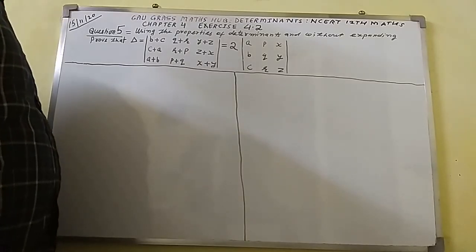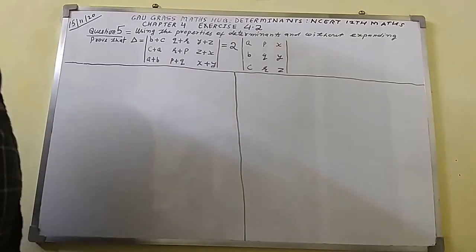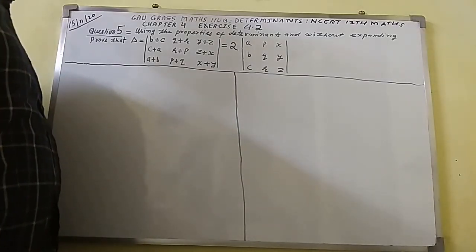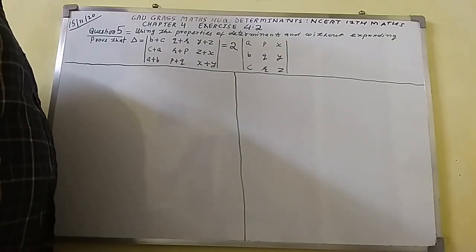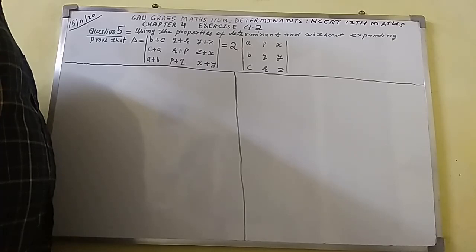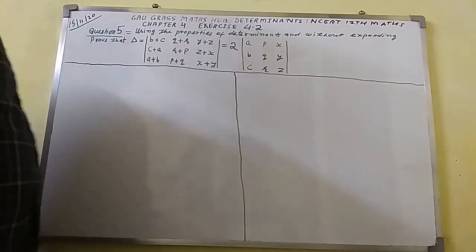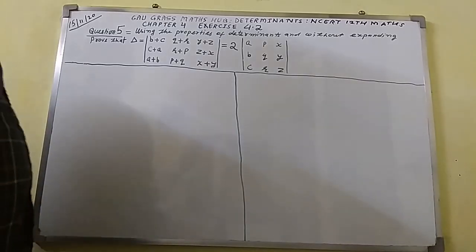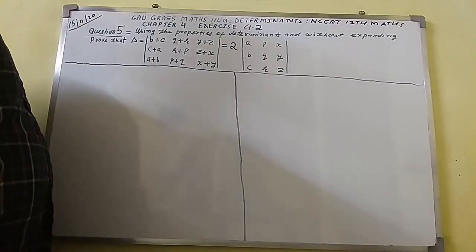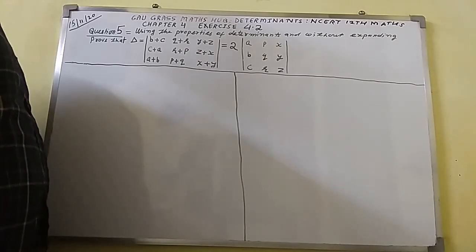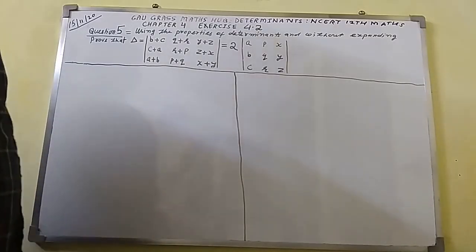I am from Gauras Maths Hub. I am going to discuss one question that has been taken from Chapter 4, Determinant and Statistical Mathematics. Question number 5 is here, taken from Exercise 4.2.